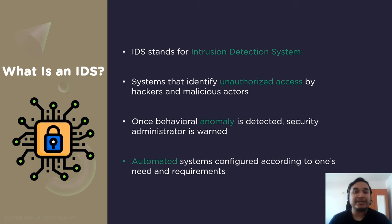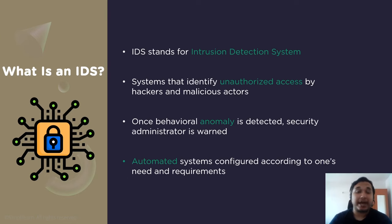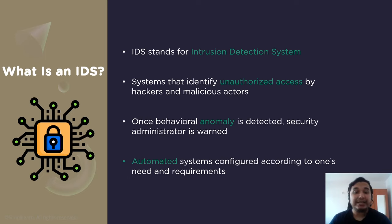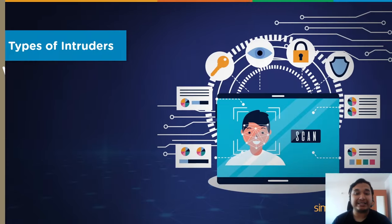The IDS has always had the patient zero problem — you have to have found someone who got sick and died before you can identify the threat. It can usually offer two types of protection: active and passive. In a passive system, the IDS detects a potential security breach, logs the information, and signals an alert. In a reactive or active system, the IDS responds to suspicious activity by logging off a user or reprogramming the firewall to block network traffic from the suspected malicious source.